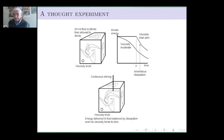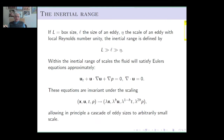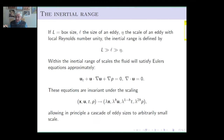The inertial range, as we understand it, is a range of scales which are small compared to the box size L, but still much larger than a scale theta — the so-called Kolmogorov scale — where the eddies will decay to viscosity. If we're in this particular range, we can reason that we ought to be able to neglect the viscous stresses and deal simply with Euler's equations. That's the assumption we're making here.